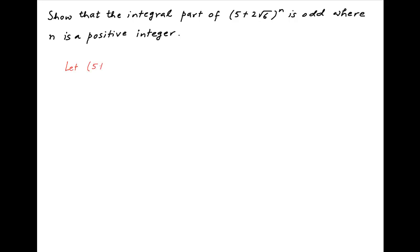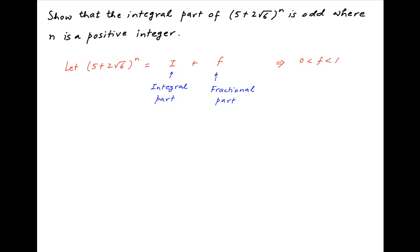Let's assume that the given number (5 + 2√6)^n is the sum of two numbers i and f, where i is the integral part of the number and f is the fractional part. Now if f is a fraction then it will lie between 0 and 1, therefore i + f is equal to (5 + 2√6)^n, which using the binomial theorem can be expanded as follows.